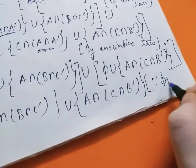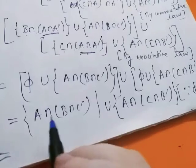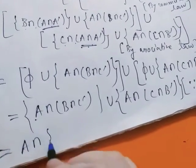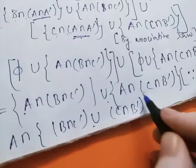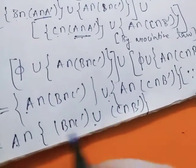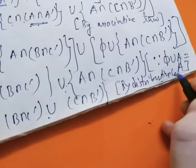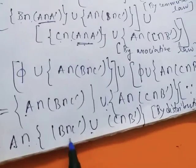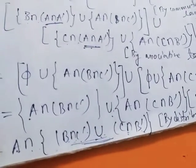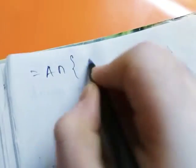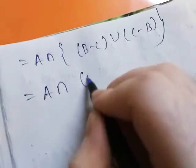Now this equals A intersection B intersection C complement union A intersection C intersection B complement, since phi union A equals A for every set A. We again use distributive law: this will be A intersection B intersection C complement union C intersection B complement, by distributive law. So this is B minus C union C minus B, which is B delta C. So this will be A intersection B minus C union C minus B, which is simply B delta C.